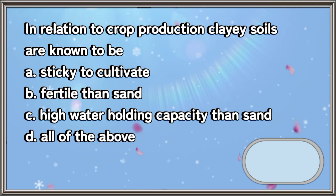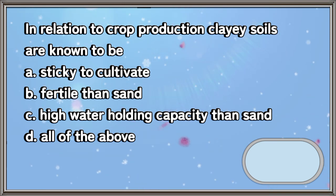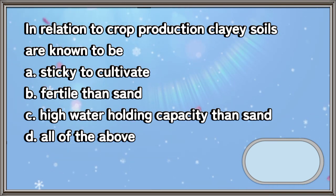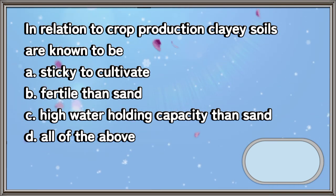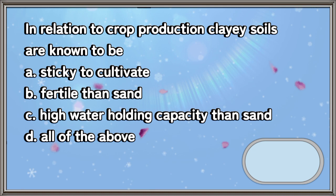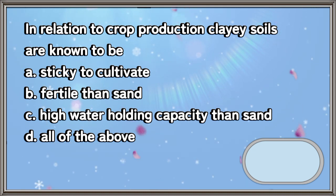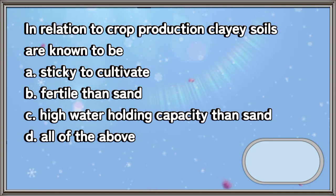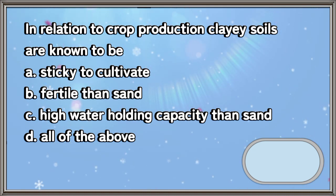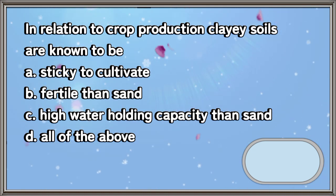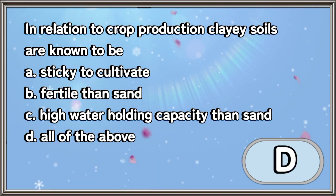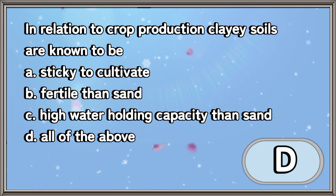In relation to crop production, clay soils are known to be: A. Sticky to cultivate, B. More fertile than sand, C. High water holding capacity than sand, D. All of the above. The answer is letter D.